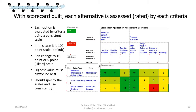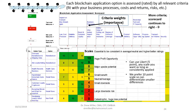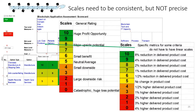With the scorecard built and weights decided, you now assess and rate all the different applications across all criteria. You use a consistent scale — in this case a 1-to-10 scale, where 10 is absolutely fantastic, 5 is neutral, and 0 is disastrous. You spend a lot of time doing analysis and rating all your different applications across these areas. The real benefit of this process is it forces you to consider all the different impacts of a blockchain application and how different application options provide more or less advantage to your firm.